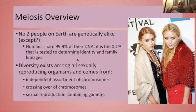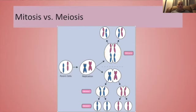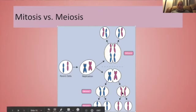Diversity exists in all sexually reproducing organisms, and again this comes from independent assortment of homologous chromosomes, the crossing over of those homologous chromosomes, and the different combinations of egg and sperm coming together. In both mitosis and meiosis, we're going to start with one parent cell. In interphase, those chromosomes copy themselves and we have sister chromatids attached at the centromere. But during mitosis, we just line up those sister chromatids and split them apart so that each daughter cell is exactly the same as the parent cell. With meiosis, we align the homologues and separate them, and then align the sisters and separate them, giving us four cells. And remember, due to crossing over, each one of these gametes is going to be different from one another.